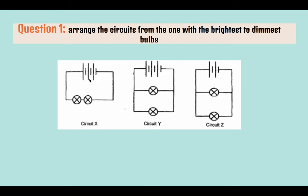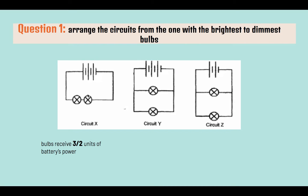Let's start from circuit X. Taking the battery as 3 units, as there are 3 batteries. In circuit X, this is a series circuit, as there is only one path for the electric current to flow through, and battery power has to be shared between the two bulbs. Hence, each bulb will receive half of the 3 units of the battery's power.